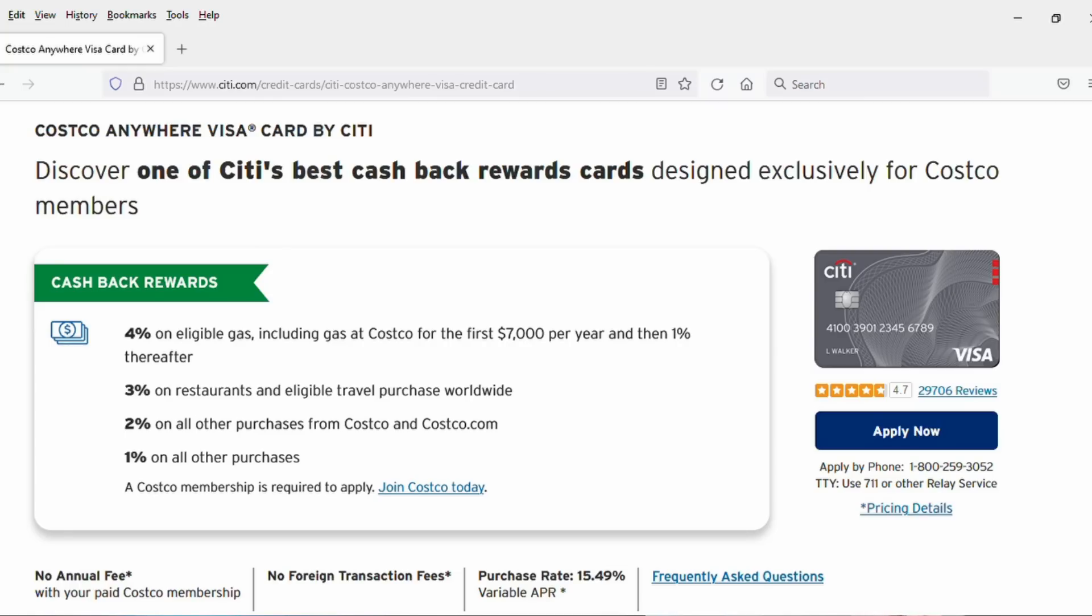Next up then is the Costco Anywhere Visa, which is only open to paid Costco members. It gives you 4% back on gas purchases, which is really strong on up to $7,000 per year. In those purchases beyond $7,000, you'd get 1% on gas. You get 3% back at restaurants, 2% at Costco, and then 1% everywhere else. There's no bonus opportunity for new cardholders with this. A pretty strong card overall, but it's not so amazing.